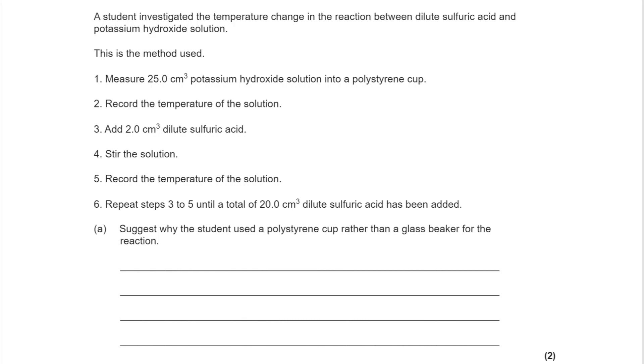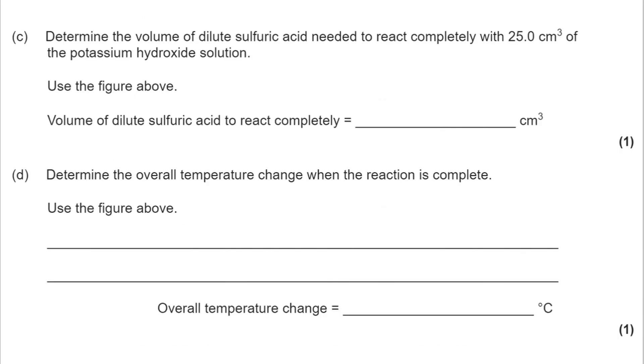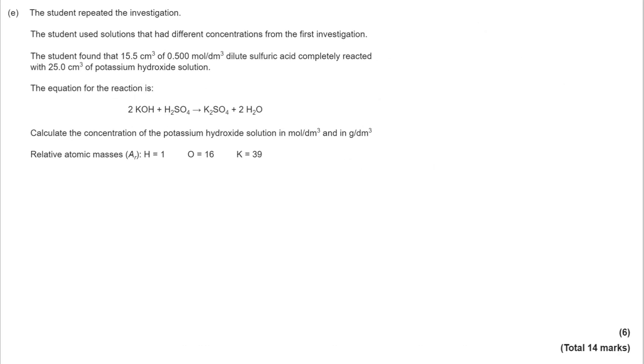This is an AQA GCSE chemistry question based around the topics of atomic structure and bonding. Have a go at the question, pausing as you go, and then review your answers once you've tried. Here's part A, part B, parts C and D, and finally part E. You can see there's a total of 14 marks available here.